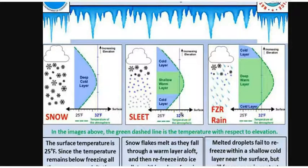Hello, everyone. This is Professor Hoffman. This is part two of chapter five video. Now we're going to talk about winter precipitation. The four major types of precipitation we're going to look at are snow, sleet, freezing rain, and plain rain.